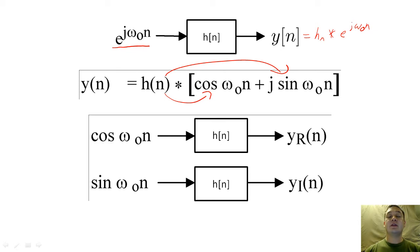We see that the real part of the input is cosine ω₀n, and the imaginary part of the input is sine ω₀n. We can find our final y of n by simply adding these real and imaginary parts together.